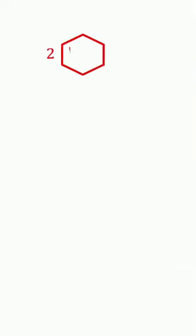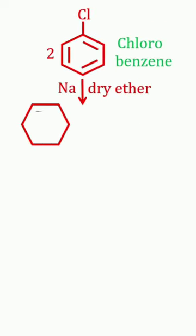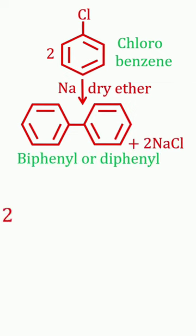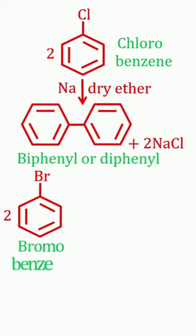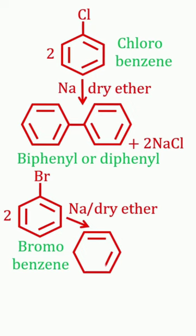Example: Chlorobenzene reacts with sodium in dry ether to give biphenyl or diphenyl. Similarly, bromobenzene reacts with sodium in dry ether to give biphenyl. Thank you.